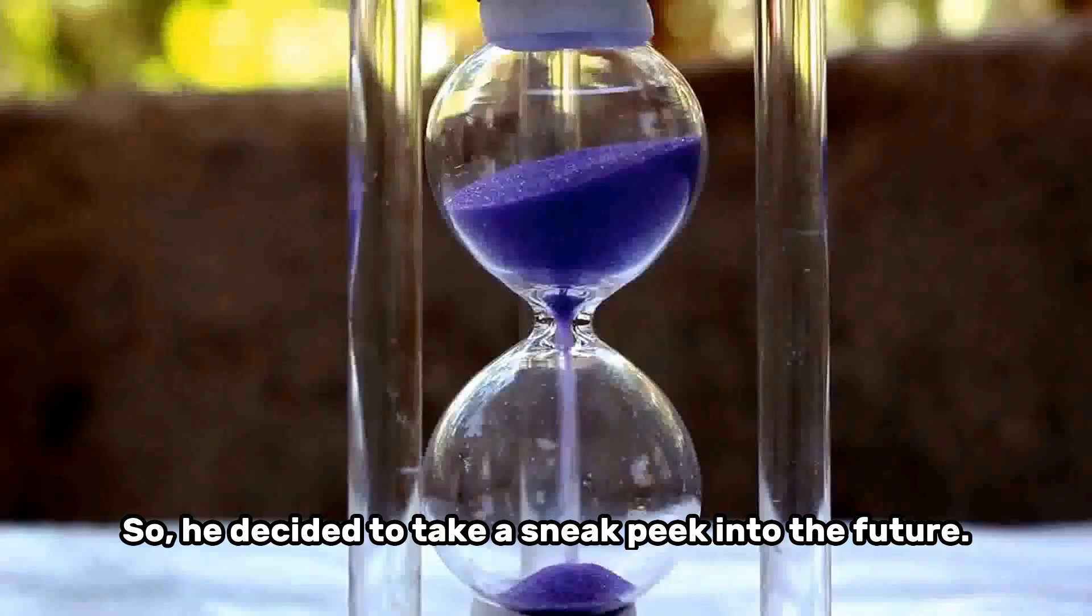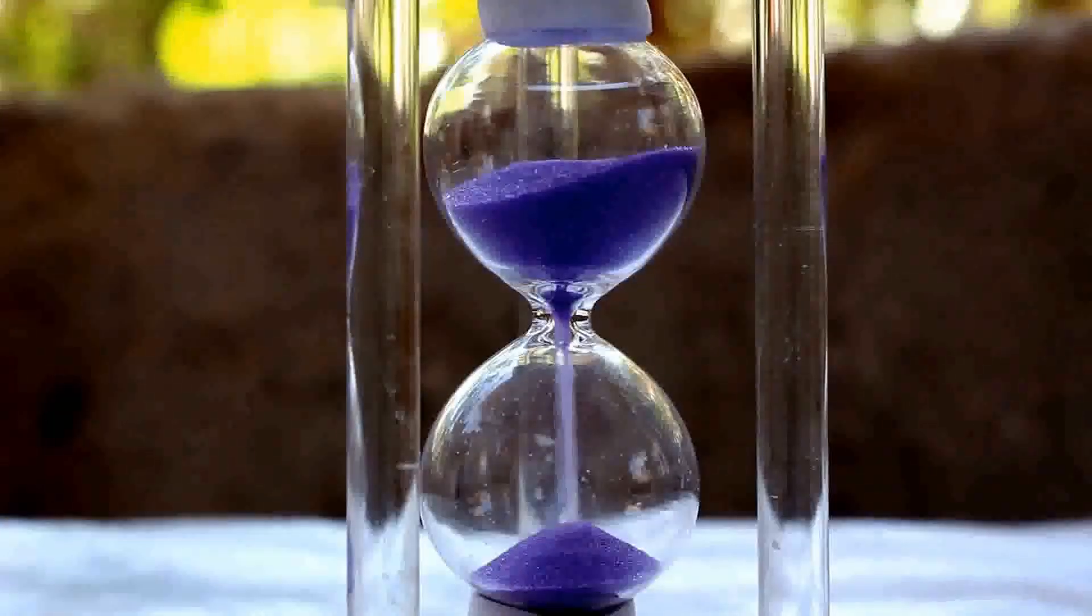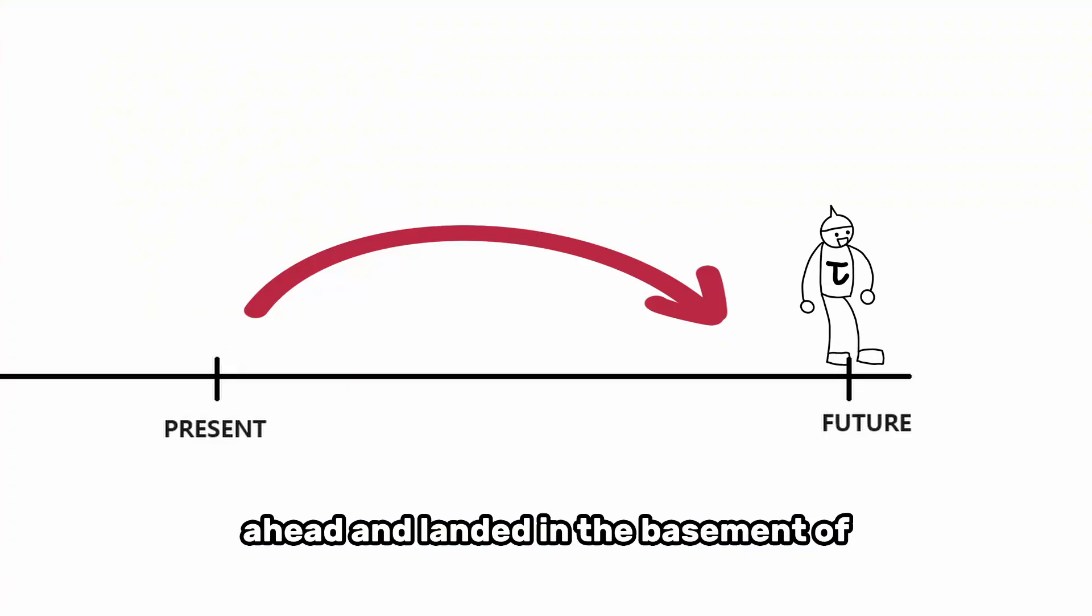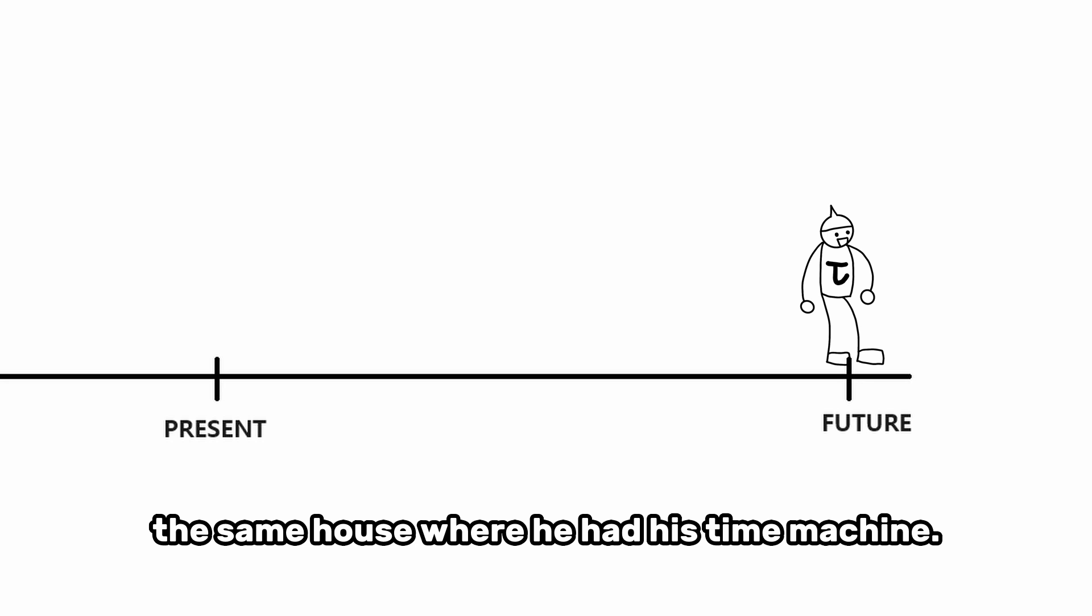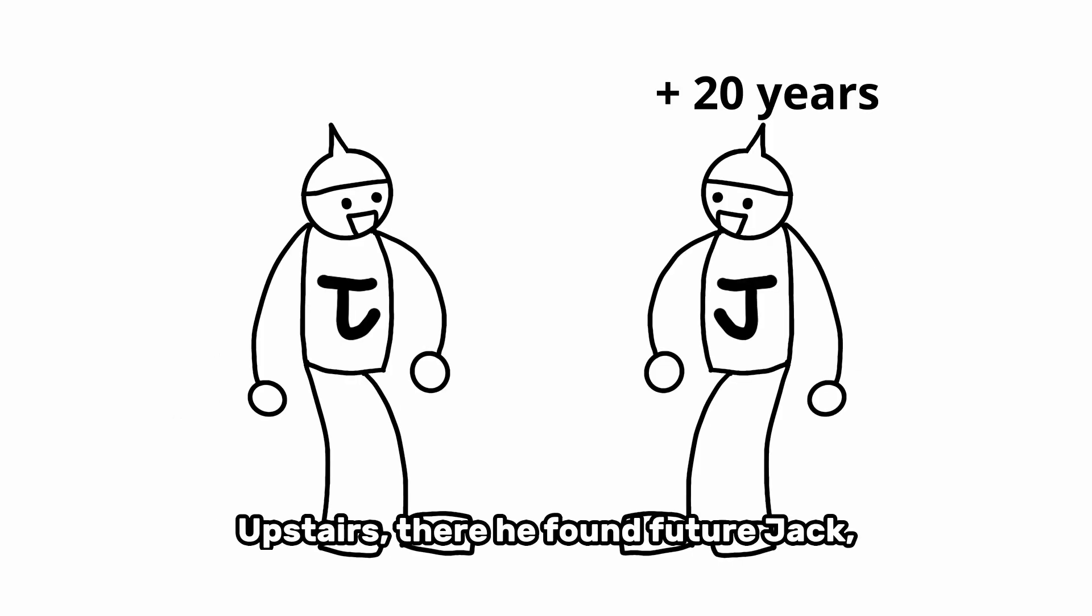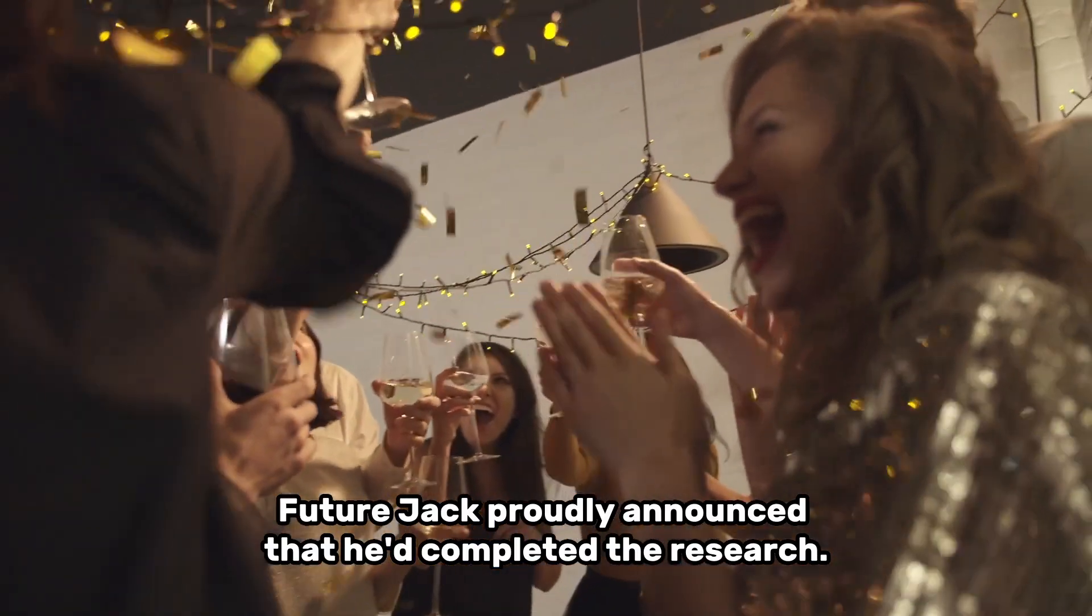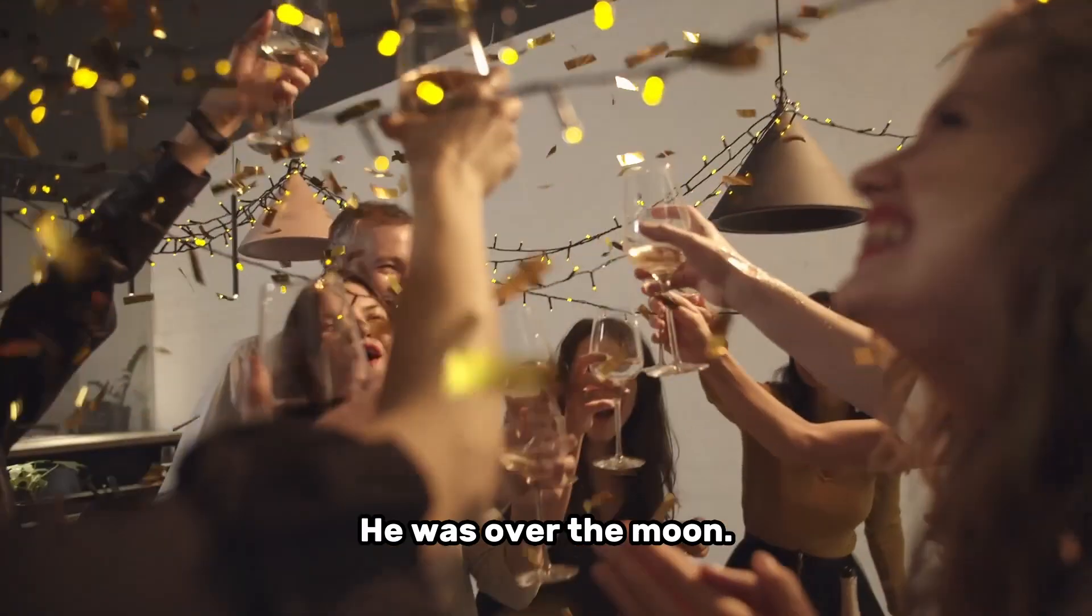So, he decided to take a sneak peek into the future. He set the time machine twenty years ahead and landed in the basement of the same house where he had his time machine. Upstairs, there he found future Jack, looking twenty years older, waiting for him. Future Jack proudly announced that he'd completed the research. He was over the moon.